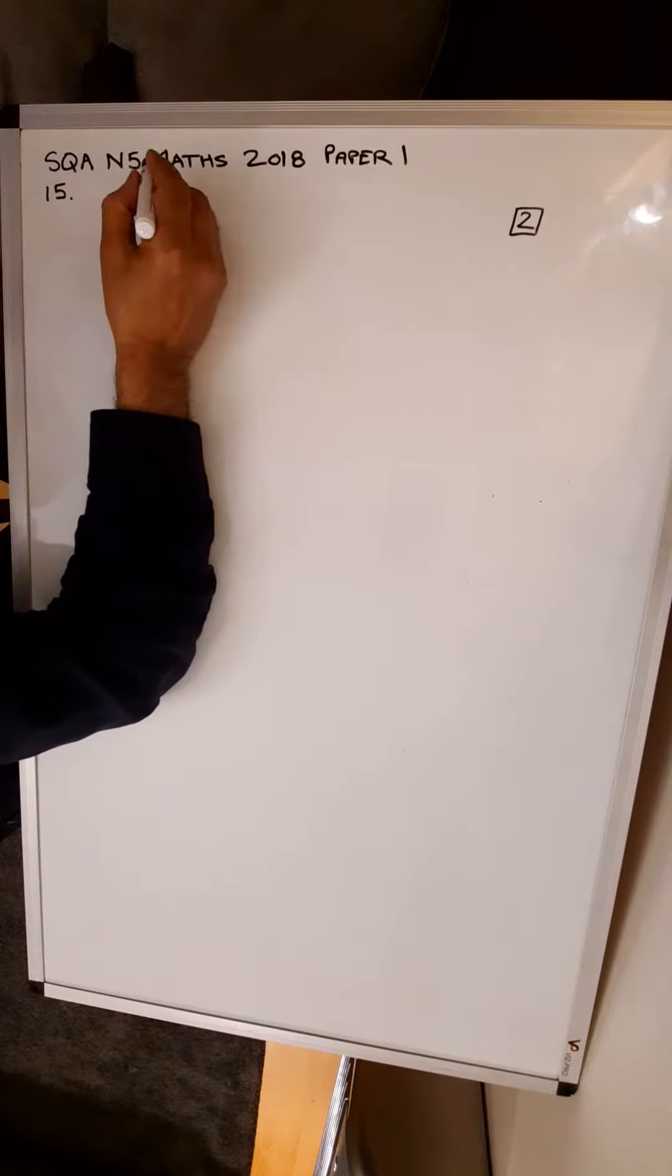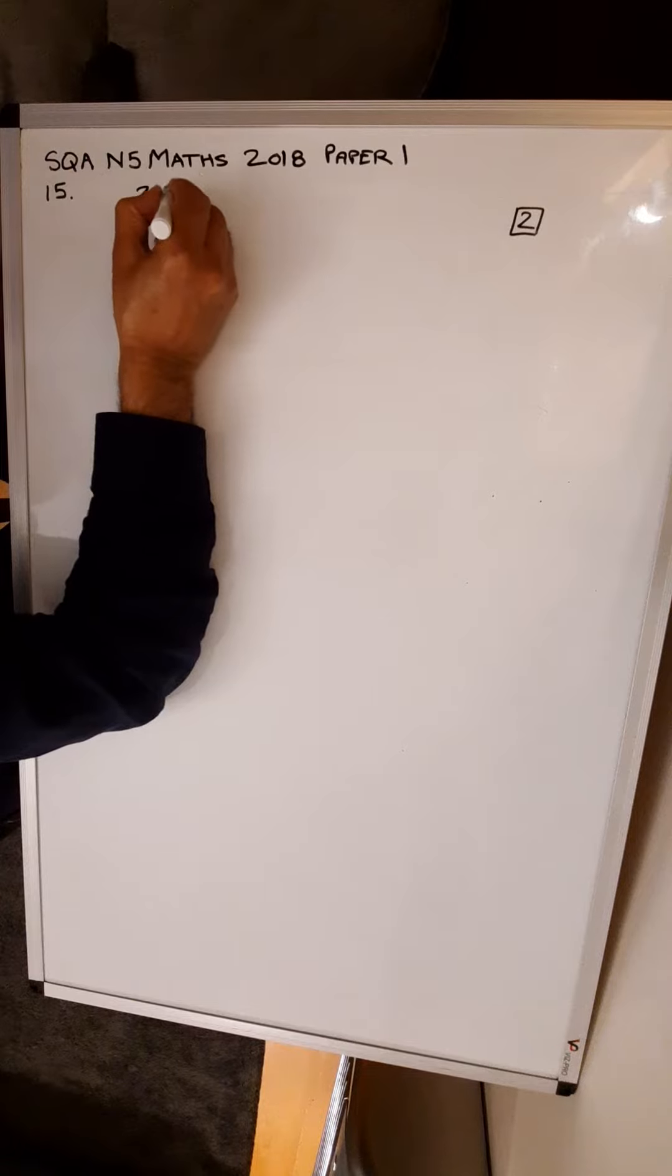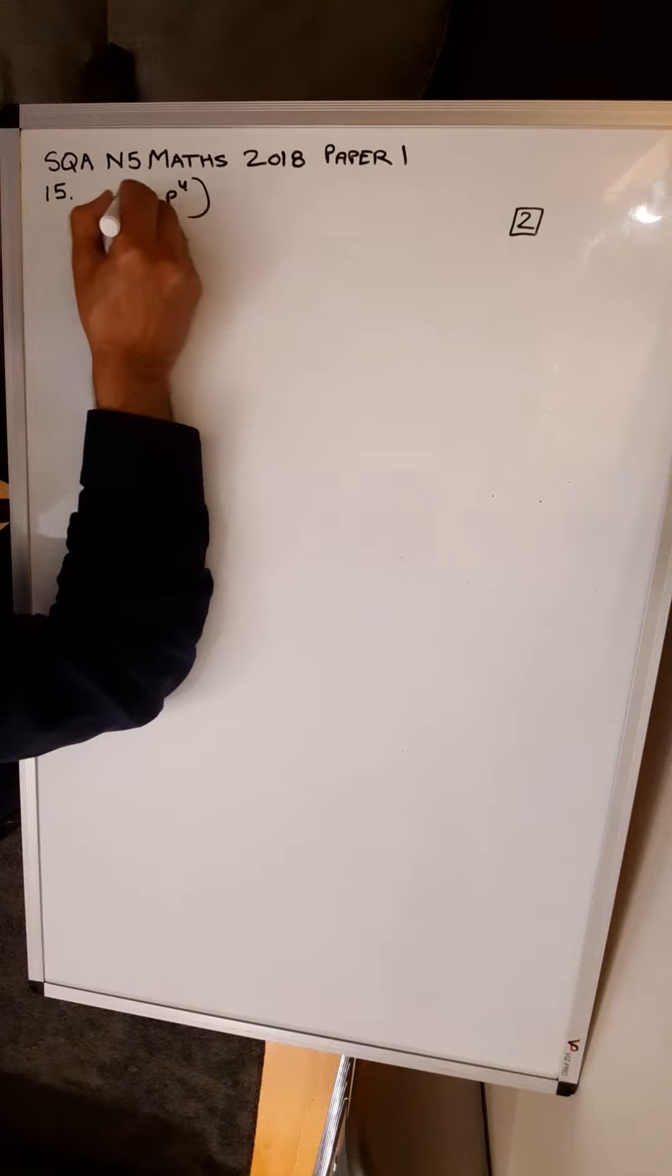Remove the brackets and simplify: 2 over 3 p to the power of 4, all squared.